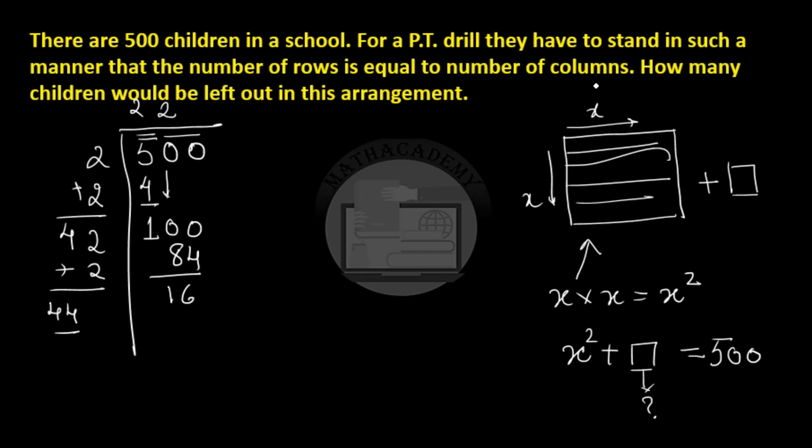So what do we see? That 500 can be written as square of 22, which is this here, and how many are remaining? 16 are remaining. This means that we can have 22 rows and 22 columns. The number of students that are fitting in this 22 rows and 22 columns are 484 students, and there are 16 students that will be left out.